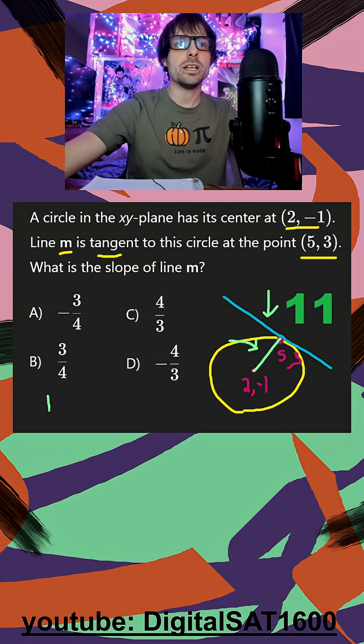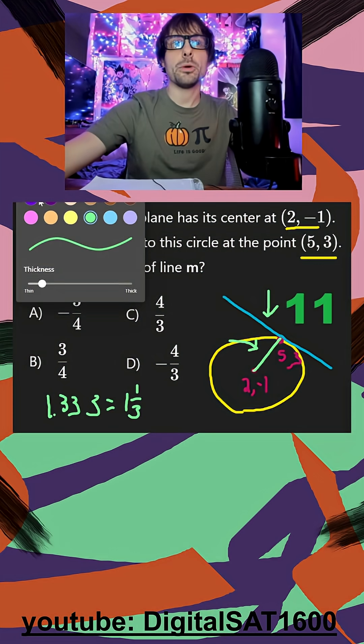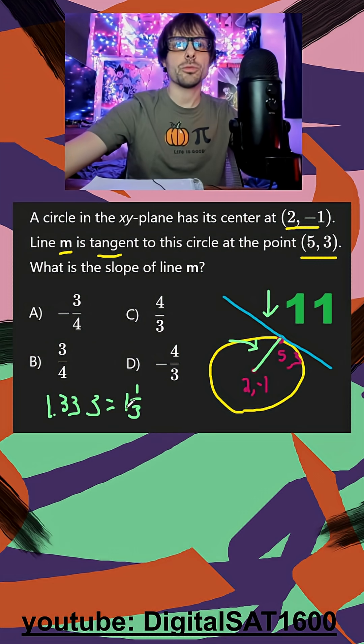I jump back to my problem, we know that 1.333 is going to be the same thing as one and one third. And to get my slope, I want to make an improper fraction. So I just do three times one plus one, that's going to be four thirds.